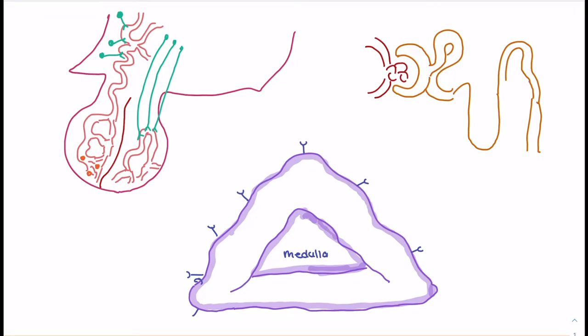In this video, we're going to talk about adrenal crisis. In order to do that, we're going to break down some of the normal functions of the hypothalamus, the pituitary gland, as well as the adrenal cortex and the medulla, and some of the functions that the hormones being released will play.